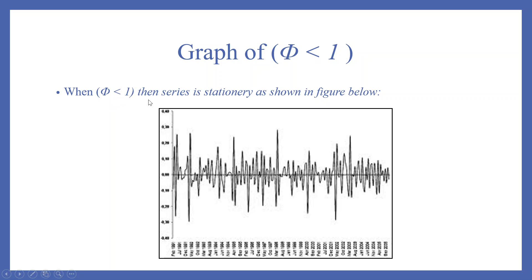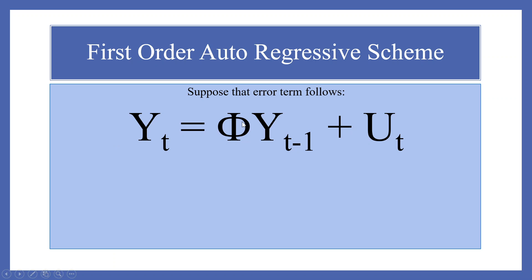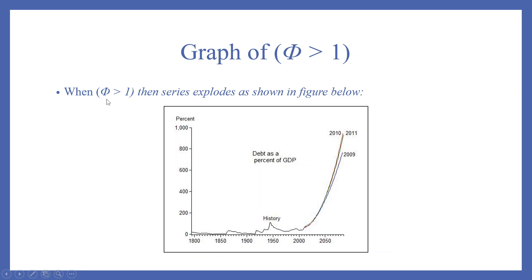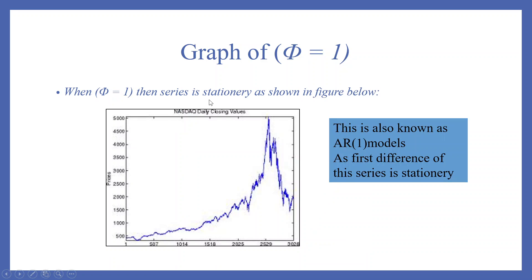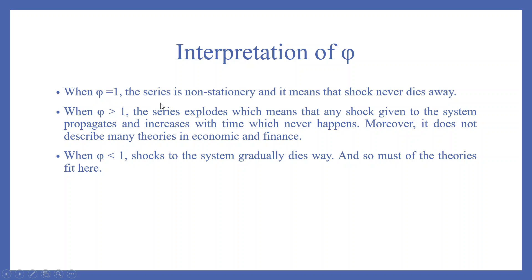When phi is less than 1, the series is stationary. When phi is equal to 1, the series is non-stationary and it means that the shock never dies away. When phi is greater than 1, the series explodes, which means that any shock given to the system propagates and increases with time — which never happens. Moreover, it does not describe many theories in economics and finance. When phi is less than 1, shocks to the system gradually die away, and so most of the theories fit here.